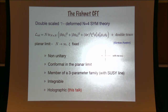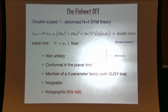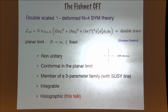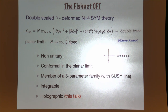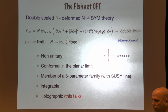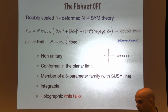What is the gamma-deformed or fishnet model? It's a very simple action — a four-dimensional theory where we have two complex scalars phi-1 and phi-2, which are N-by-N matrices. We have a standard kinetic term and one four-scalar interaction. I only consider this model in the large-N limit. We take the size of these matrices to infinity, keeping the analog of xi, which is the square root of the 't Hooft coupling, fixed.